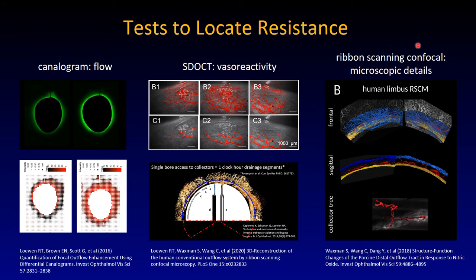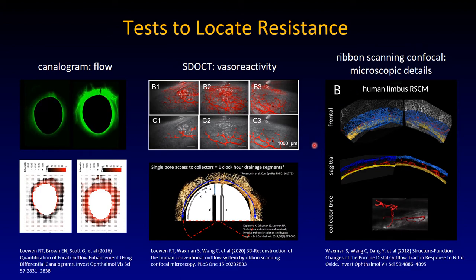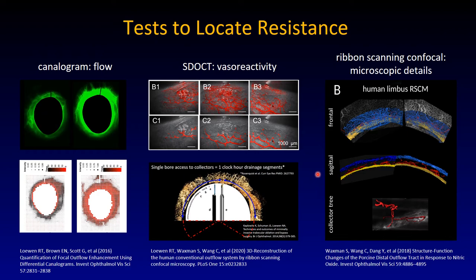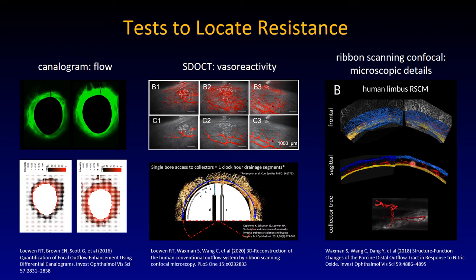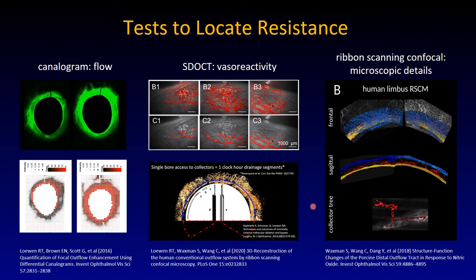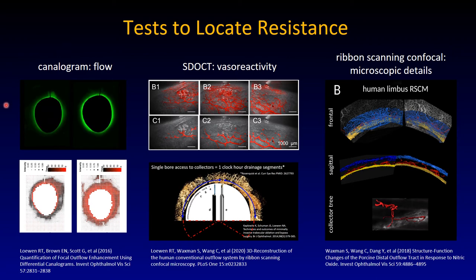One can also use a very high resolution ribbon-scanning confocal, which however only works once the tissue is fixed and a clearing protocol has been applied to make it transparent — otherwise an optical microscope cannot see through the opaque sclera. The tissue must also be stained. This collective channel in a human eye shows how these channels stretch from Schlemm's canal — seen here in yellow — all the way into the draining plexus.